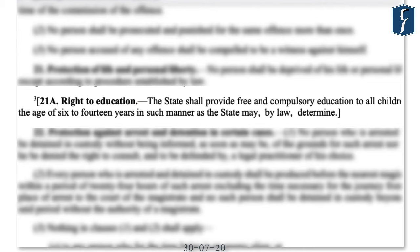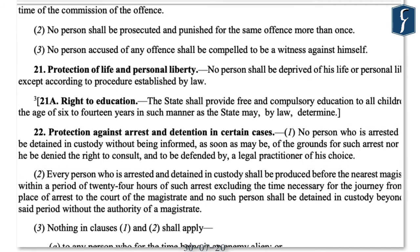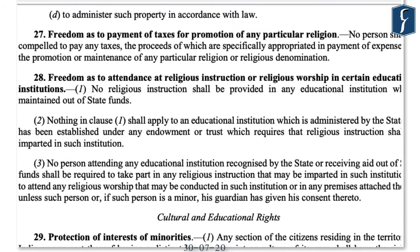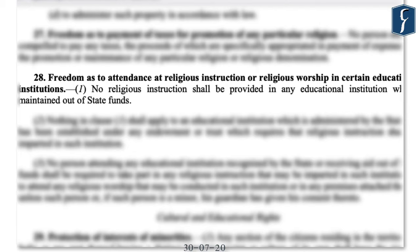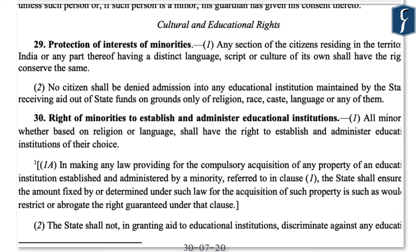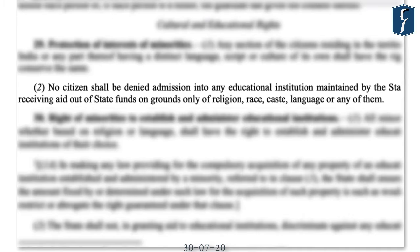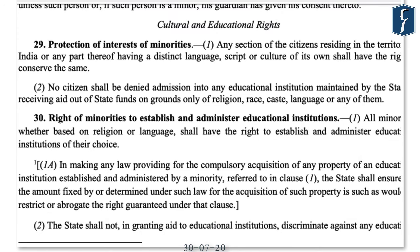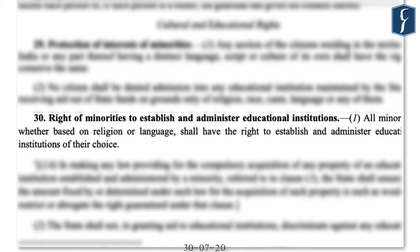Article 21A, inserted by the 86th Constitutional Amendment of 2002, talks about the right to education, where the state shall provide free and compulsory education to all children of the age of 6 to 14 years. Article 28 talks about freedom of religion but also deals with educational institutions. Cultural and educational rights under Articles 29 and 30 are very important — Article 29 clause 2 says no citizen shall be denied admission into any educational institution maintained by the state on grounds of religion, race, caste, or language. Article 30 gives the right to all minorities, whether based on religion or language, to establish and administer educational institutions of their choice.